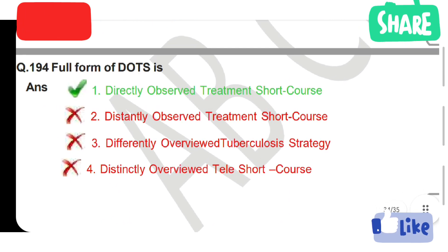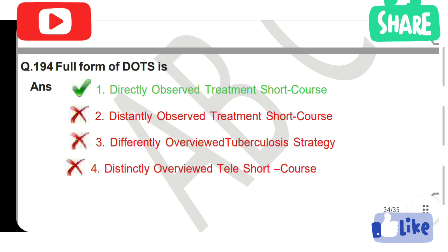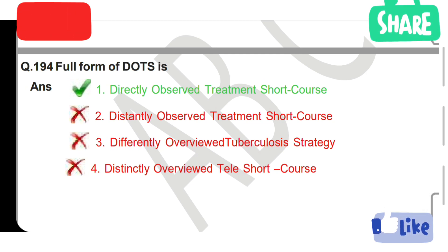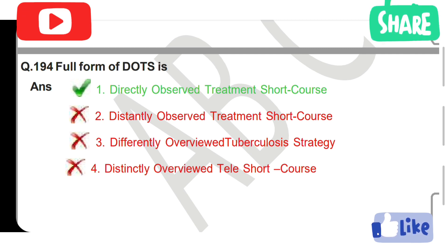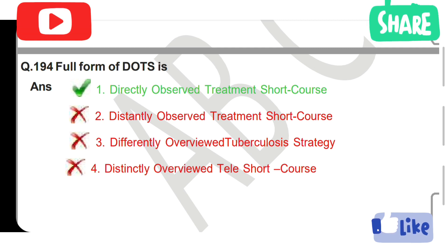Full form of DOTS is: Option 1: Directly Observed Treatment Short Course. Option 2: Distantly Observed Treatment Short Course. Option 1 is the correct answer — Directly Observed Treatment Short Course.